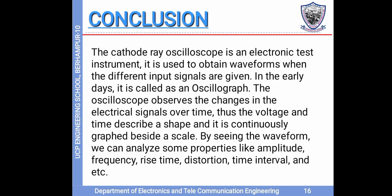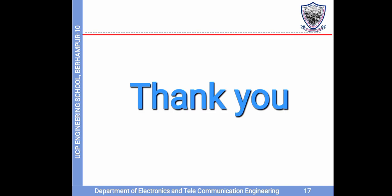Conclusion. The cathode ray oscilloscope is an electronic test instrument used to obtain various waveforms when different input signals are given. In earlier days, it was called an oscillograph. The oscilloscope observes the changes in electrical signals over time. Thus, the voltage and time describe its shape and it is continuously graphed beside its scale. By seeing the waveform, we can analyze properties like amplitude, frequency, rise time, distortion, time interval, etc. Thank you all.